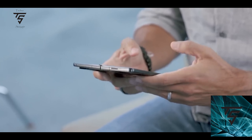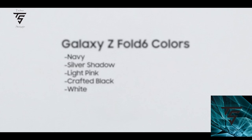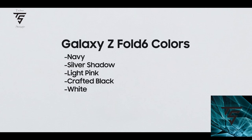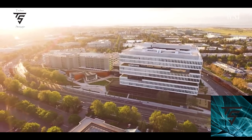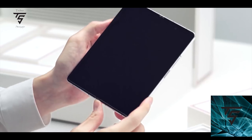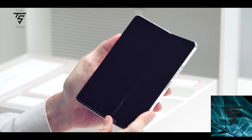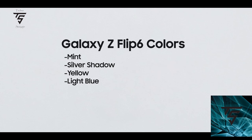The color selection is looking pretty good and comes from reputed leaks. The Z Fold 6 will come in dark blue — now called Navy — Silver Shadow, Light Pink, Crafted Black, and White. Silver Shadow looks particularly nice, while Crafted Black and White will be exclusive to the Samsung Store.